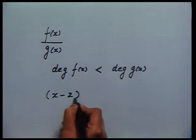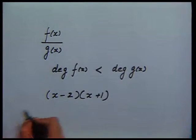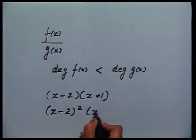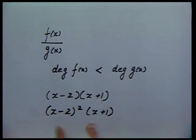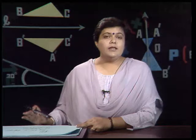The second thing to keep in mind is to break the denominator of the proper rational function into its factors. These may be linear non-repeated — something like (x-2)(x+1) — or linear repeated, such as (x-2)²(x+1), where x-2 is a repeated factor. There could also be a combination of linear and quadratic factors, or linear and repeated quadratic factors.